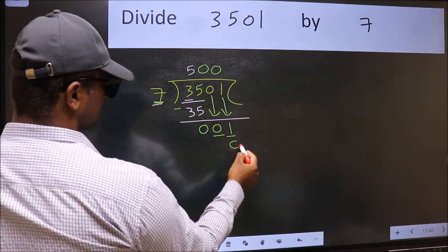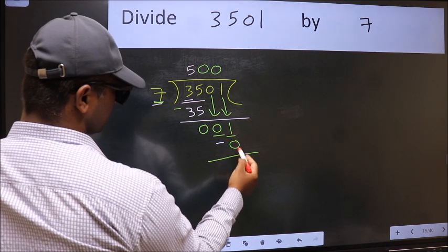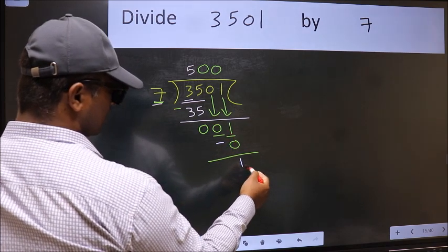So 7 into 0 is 0. Now we should subtract. 1 minus 0 is 1.